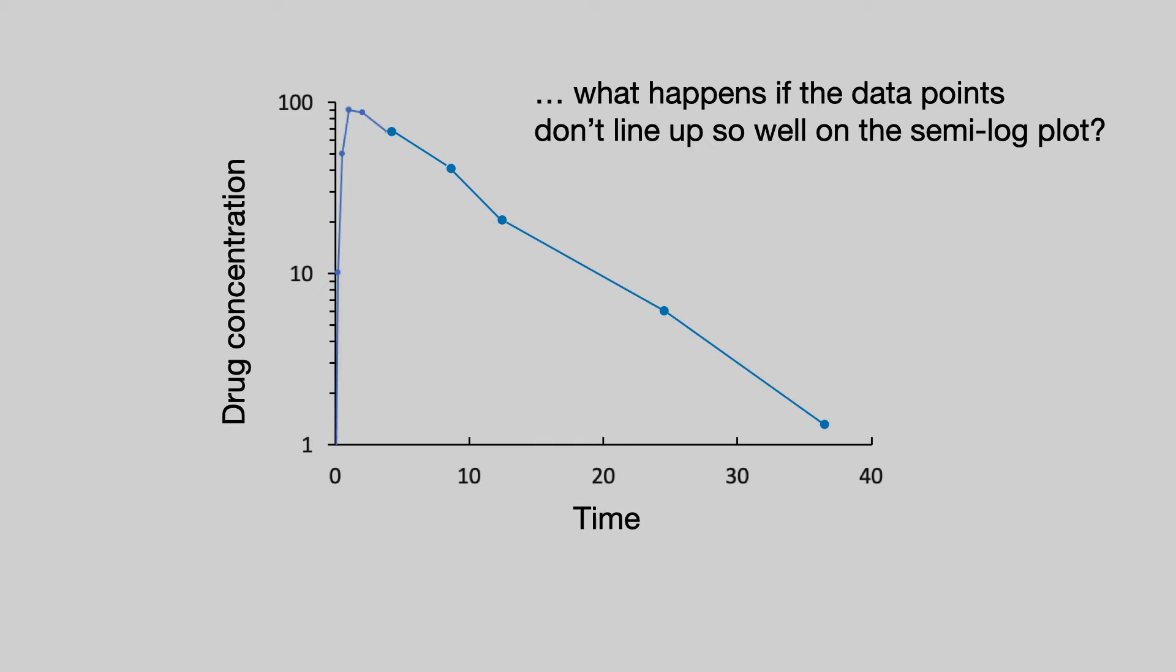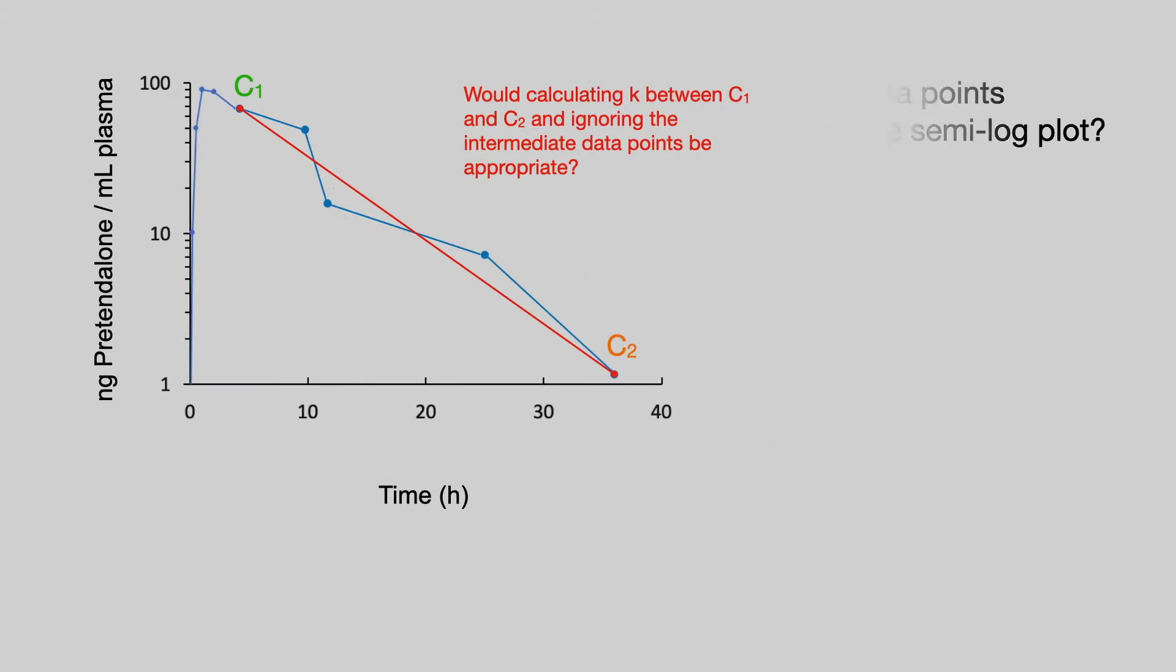And to demonstrate this, I'm just going to arbitrarily move some of those data points around. The plot is now no longer an ideal straight line in the elimination phase. So ask yourself, would calculating the elimination rate constant between just two data points, C1 and C2, and ignoring the intermediate data points, would that be appropriate? And I suspect you would agree that it wouldn't be.